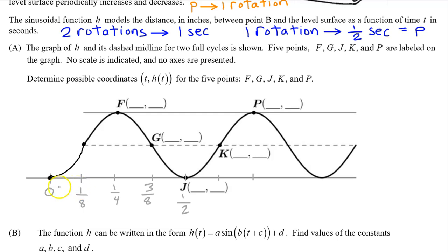In fact, this first input value tells us the width of each one of these intervals. So we have one eighth, two eighths, three eighths, four eighths. This next input value will be five eighths. And this final input value will be six eighths, which reduces to three fourths. Now we have the input values for all five points.